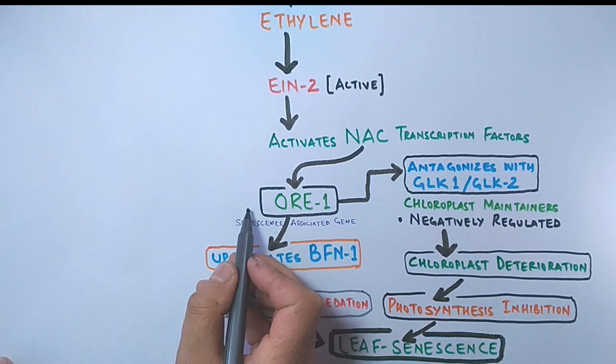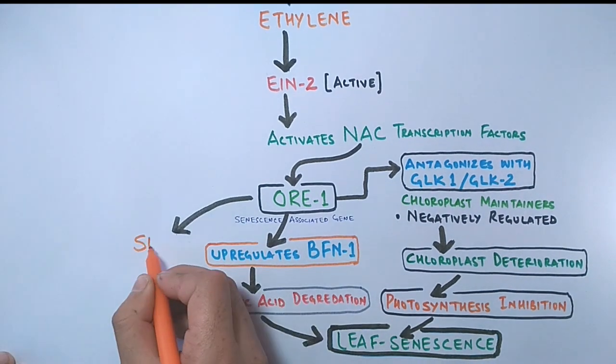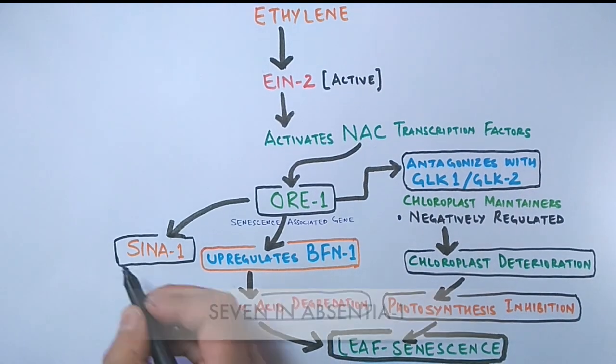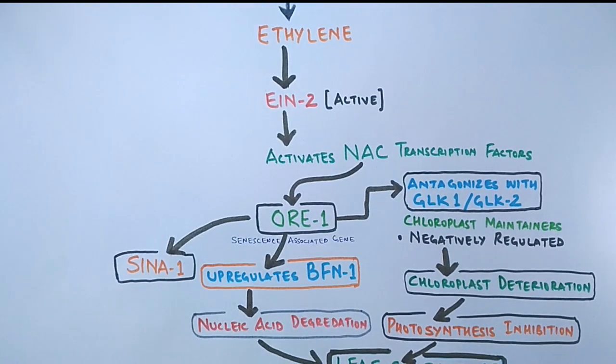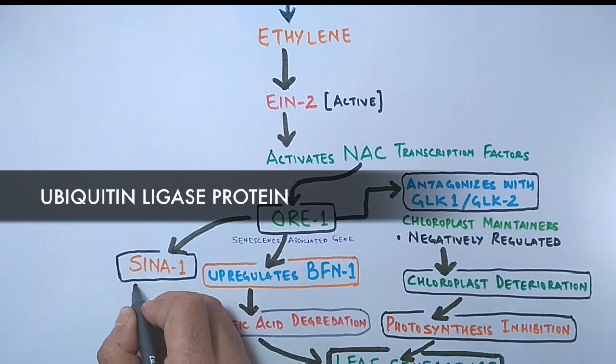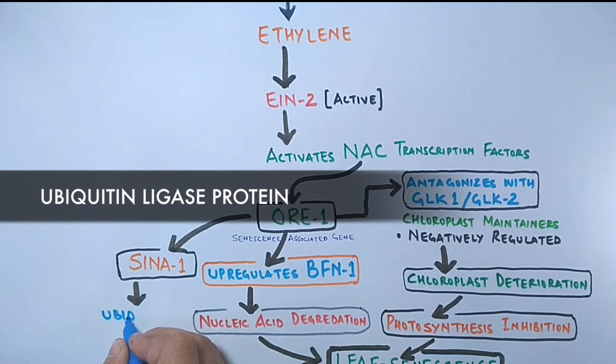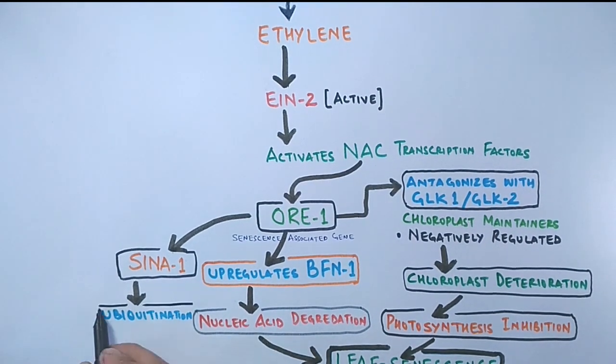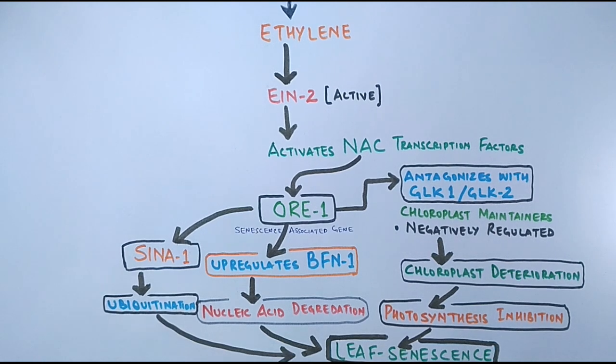The third pathway is the ORE1 also activates SINA1 gene, that's seven in absentia gene. This SINA gene codes for ubiquitin protein ligase, which mediates the ubiquitination in leaf senescence proteins, thus leading to leaf senescence also.